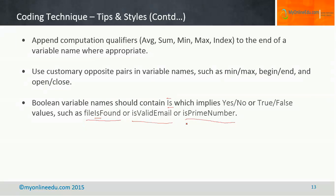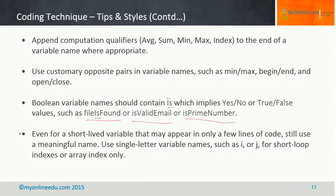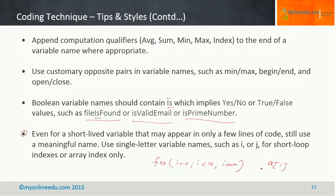In general, use variable names properly — don't be lazy and use names like xyz or abcd. Use proper, meaningful names. However, if you want to use single-letter variable names such as i or j, use them only for short loop indexes — for example, 'for (i = 0; i < 10; i++)' — or for array indexing. Do not use i or j as a proper variable name where you are, for instance, calculating temperature from Celsius to Fahrenheit — that does not make sense.